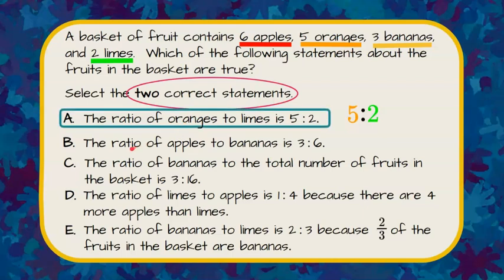I need to find one more. Part B: the ratio of apples to bananas is three to six. Apples is six and needs to come first, bananas second. So the ratio would be six to three — six apples to three bananas. That is not a correct statement, so I'm going to rule out choice B.